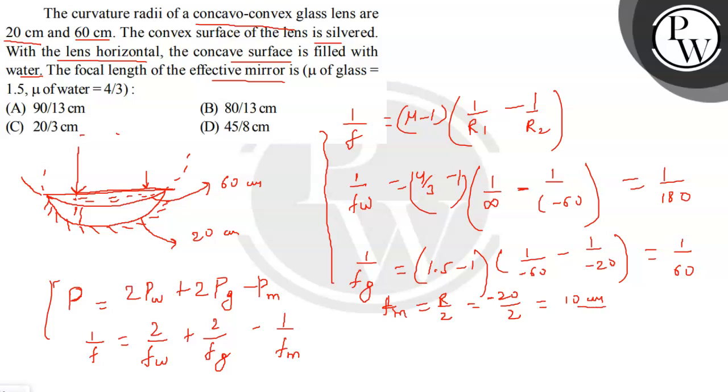So now putting the value here we will get, writing it as 1 upon f equals to 2 upon fw is 1 upon 180, so we can write it as 180 plus 2 upon 60 minus 1 upon minus 10. So this will turn out to be f equals to 90 upon 30 centimeter, which is 90 by 13. So our option A is the correct answer. Thank you.